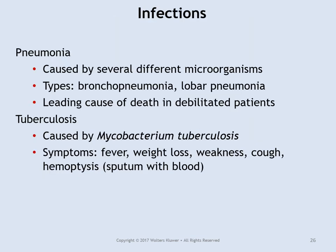Pneumonia is a general term that can be caused by different microorganisms, not just one. You can have bronchopneumonia or lobar pneumonia when it gets deep into the lobes of the lung. It is a leading cause of death in people who are unable to fight off the infection.